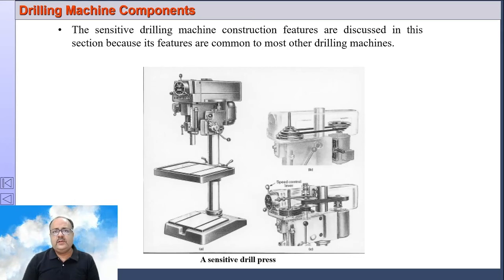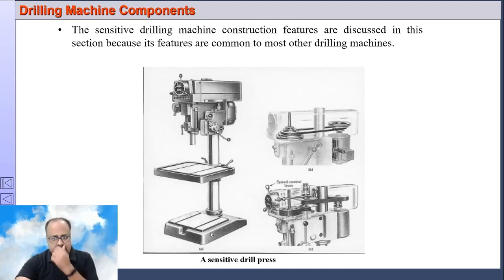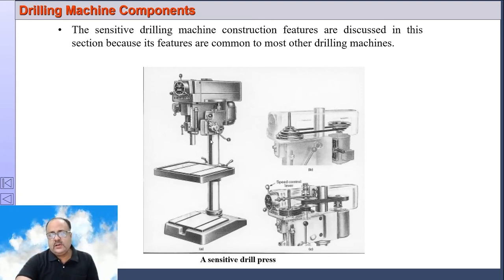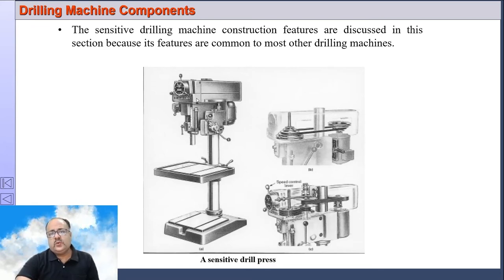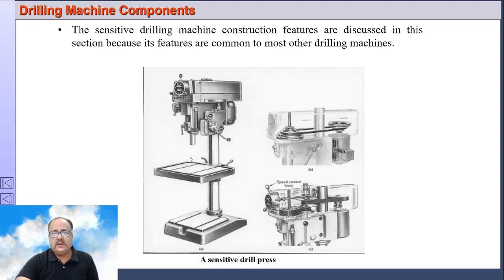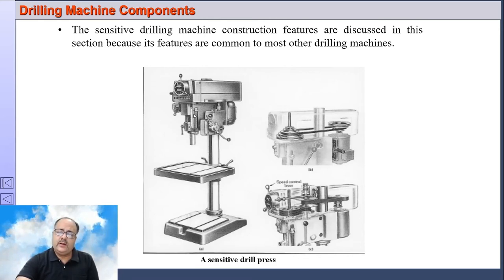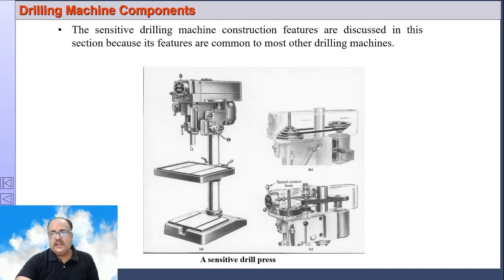Now we will discuss the drill components, the major components of a sensitive drill press. There is a bed which is normally made of cast iron. On the rear side of the bed you have a circular column so the table can move up and down. On top of the column, we have the drill head. The drill head consists of the mechanism required to rotate the spindle and the mechanism required to feed the spindle — the spindle will rotate as well as move up and down. This mechanism is called the quill assembly mechanism.